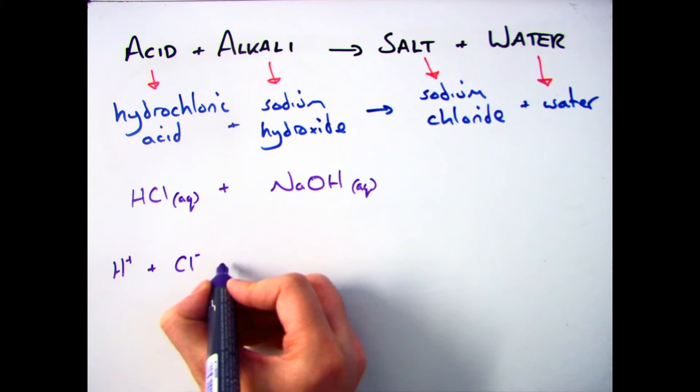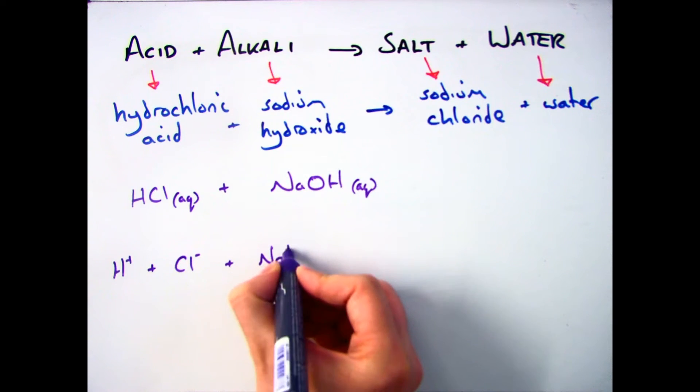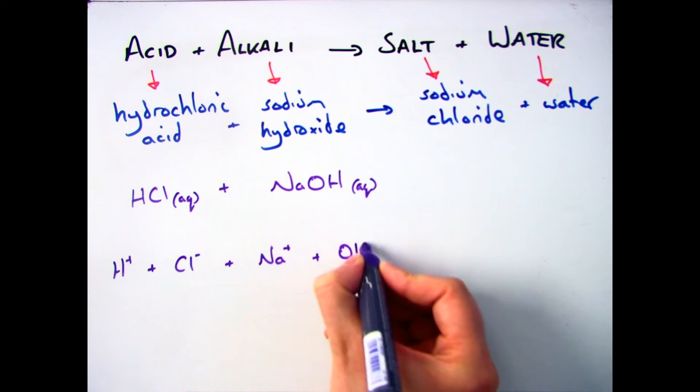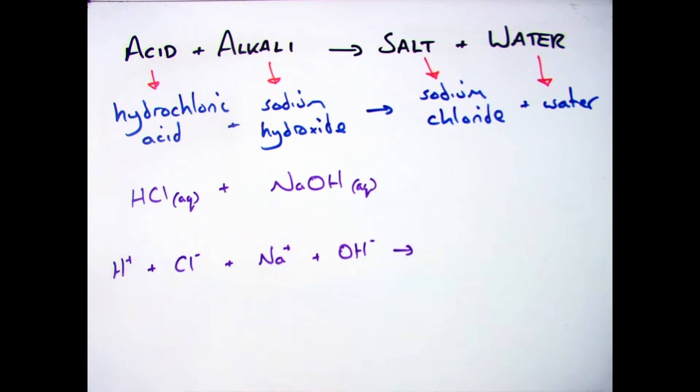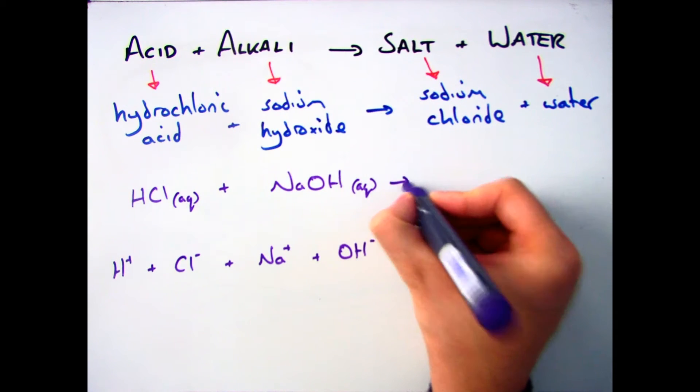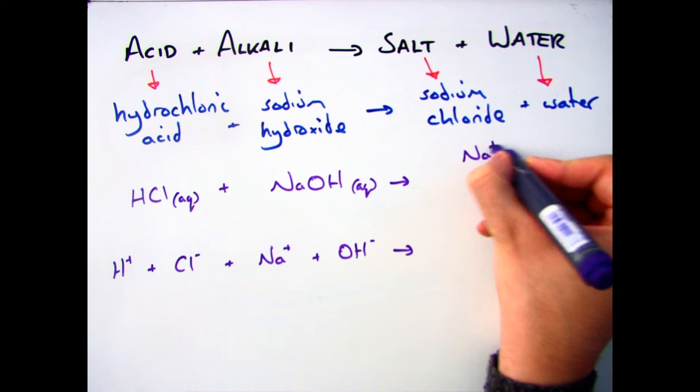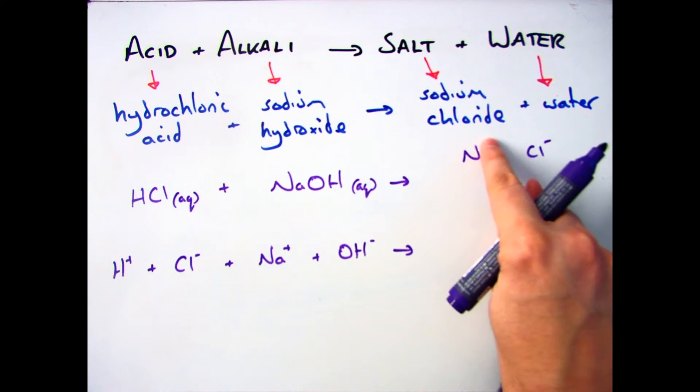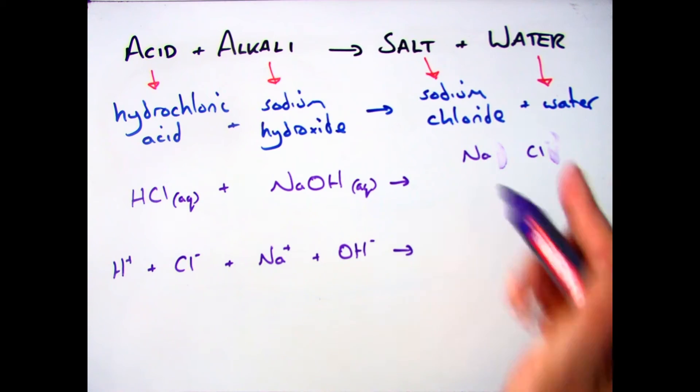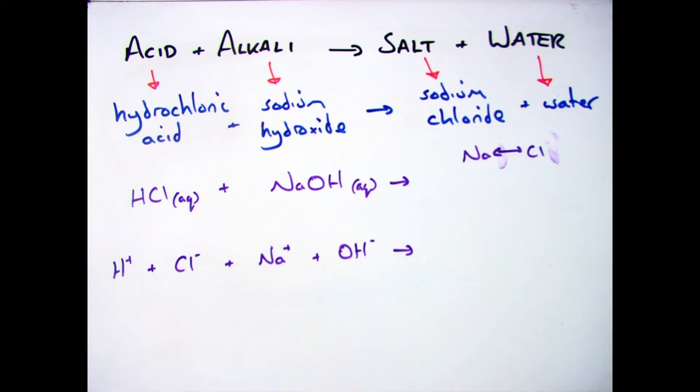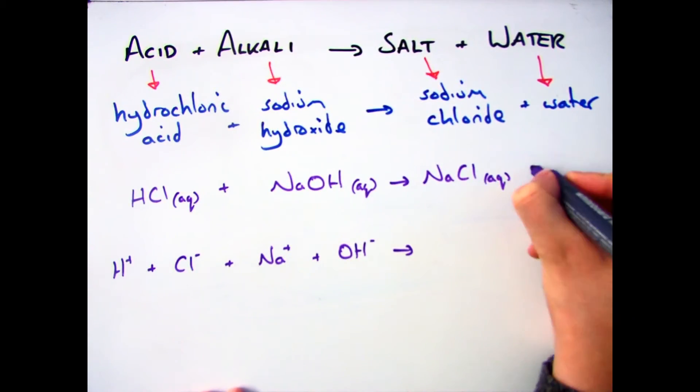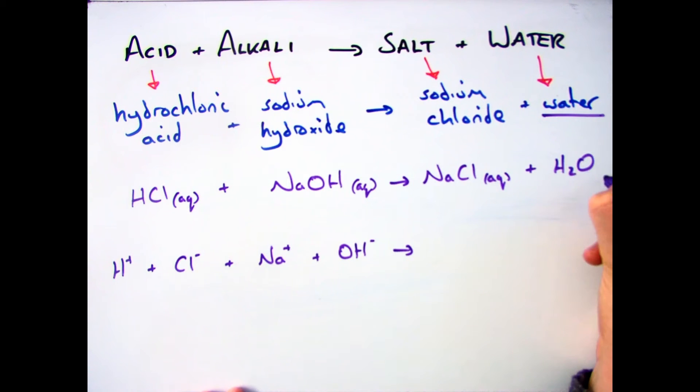If we were to look at the ions though, you've got your H plus and your Cl minus ions reacting with your Na plus and OH minus ions. And then, they are going to form your products, which were sodium chloride, NaCl. You know it's NaCl because you've got 1 plus 1 minus, the charges cancel each other out. Sodium chloride is soluble, so you put your AQ down. Water, you should know is H2O, that's a liquid, so you put the symbol L down, the state symbol.